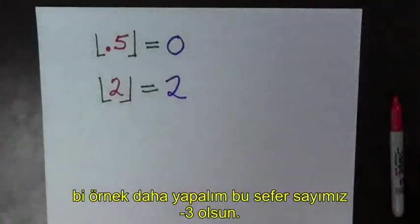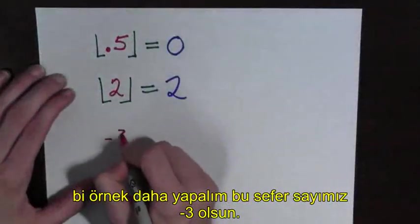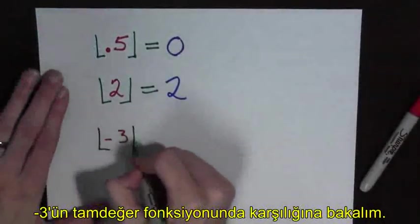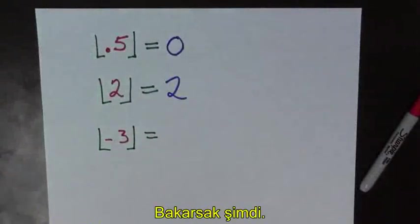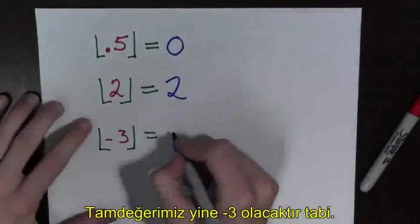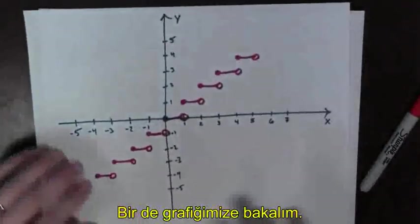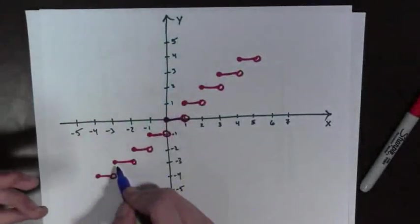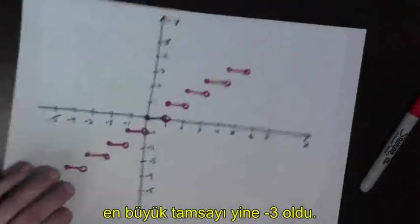And let's do one more example. How about negative 3? Okay, so what's the greatest integer that's less than or equal to negative 3? Well, let's see. The greatest integer is going to be negative 3 again. So let's look at the graph. So negative 3, it's an integer itself, and it is the greatest integer that's less than or equal to negative 3.